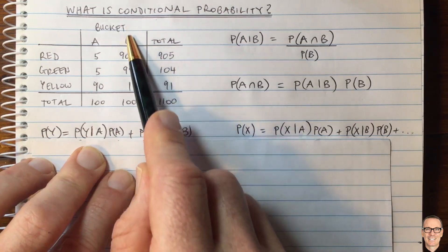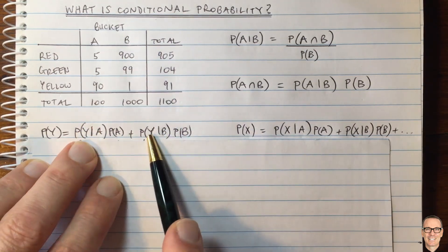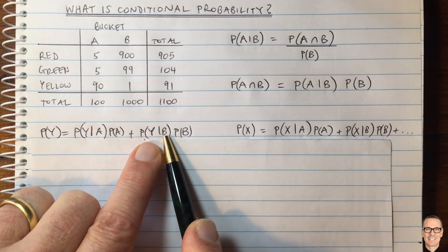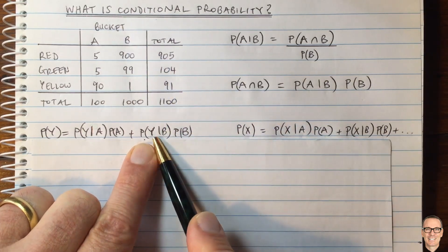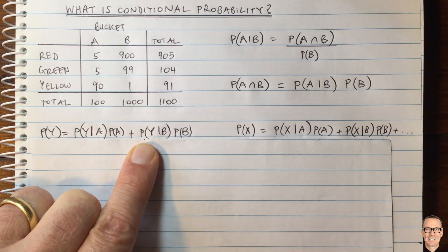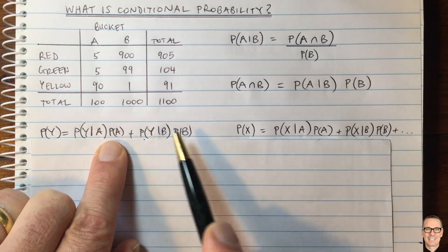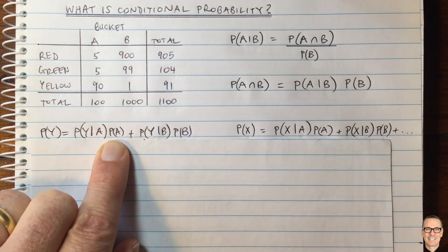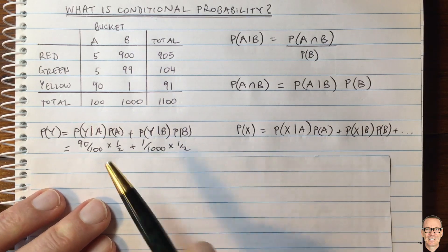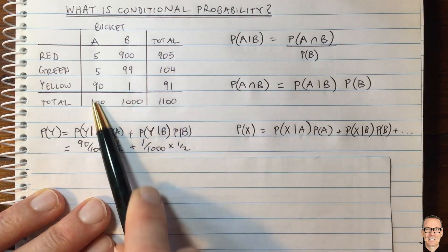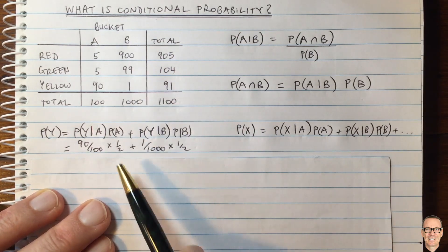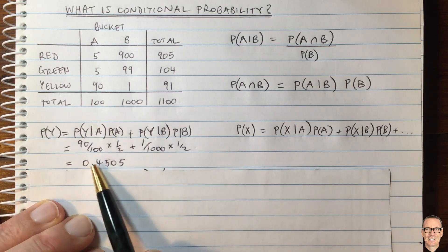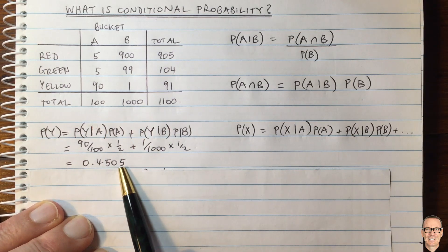If you only had bucket B, so you're told it's conditional bucket B, then you get a yellow 1 out of 1000. And the probability of A, probability of B, that's the chance of choosing those ones. We said that's a half. So we can fill in these numbers here directly from the table going down the column, and then we can see that this expression equals 0.4505.